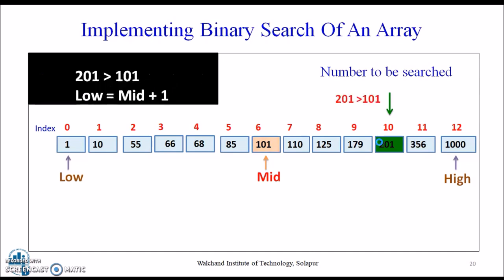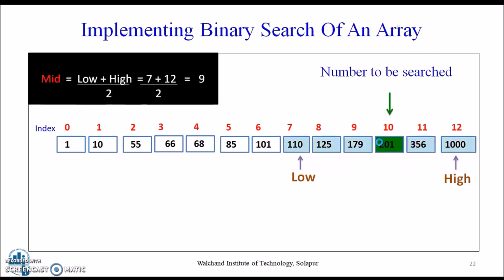And based on that we decided to either move left or right from the mid element. Here the mid was 101, that is less than 201, therefore we move towards the mid by making it 7, then calculating the new mid. Further comparing, comparing, comparing it once again, we calculated the mid.